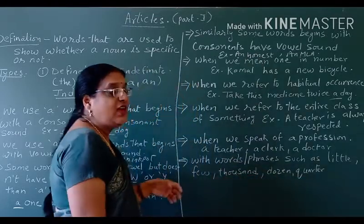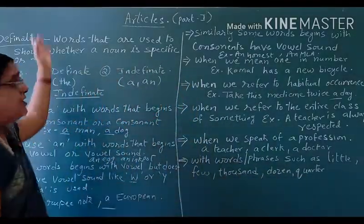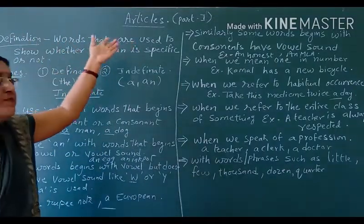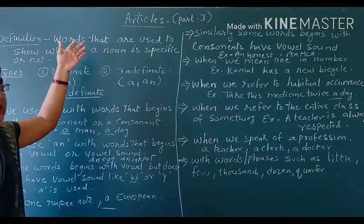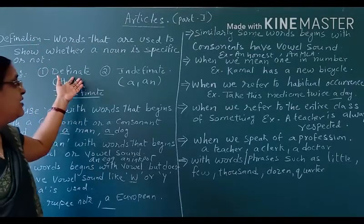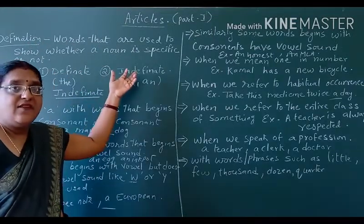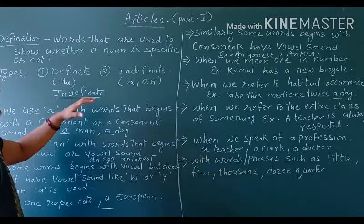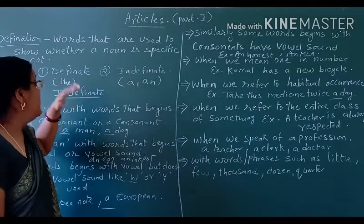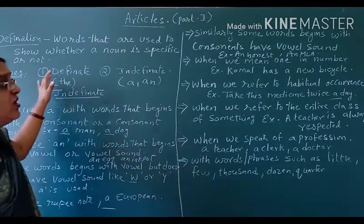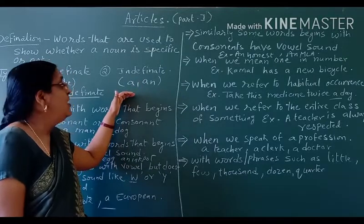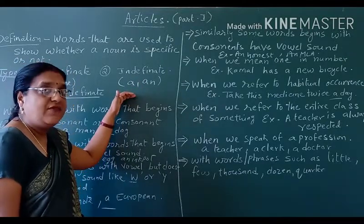Let us revise once again about the indefinite article. What are articles? Words that are used to show whether a noun is specific or not are known as articles. There are two types of articles: definite article and indefinite article. Whenever we are speaking about a specific object — a definite thing — then 'the' is used. Whenever we are speaking about a non-specific object or thing, we are using the indefinite article.